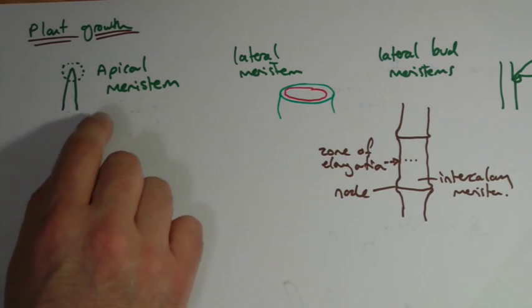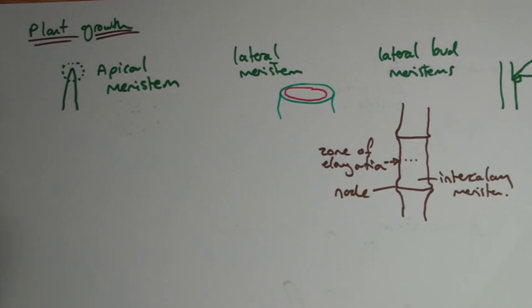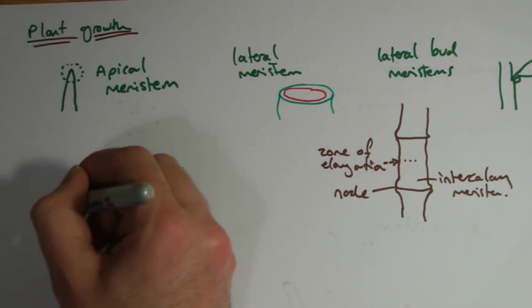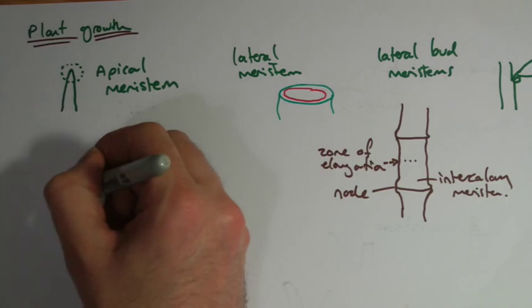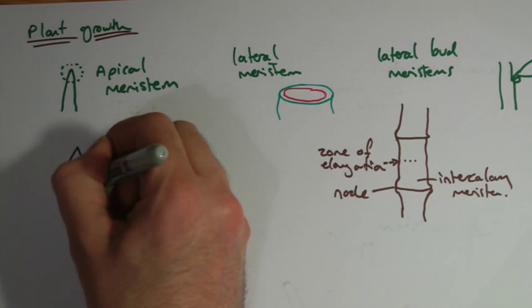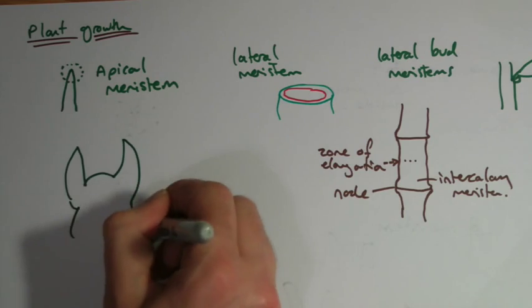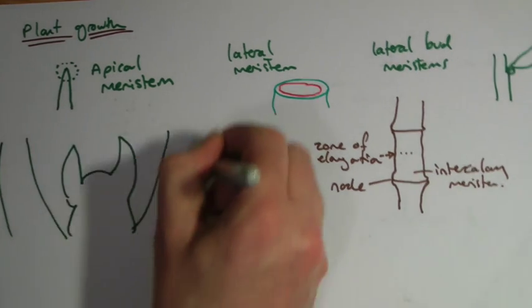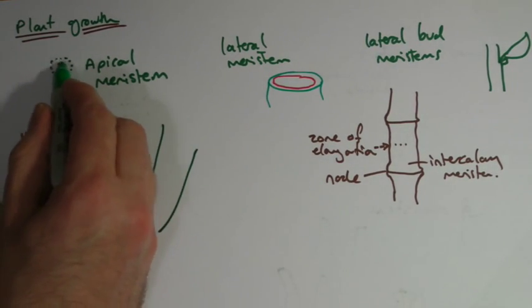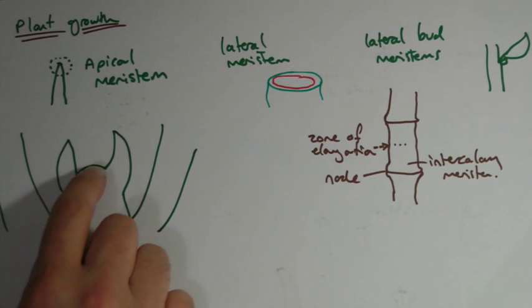So what's going on? If we zoom in a little bit on these apical meristems, I'm going to try and draw one. So this would be what's actually happening. You get a better idea if you look in your book, to be honest.